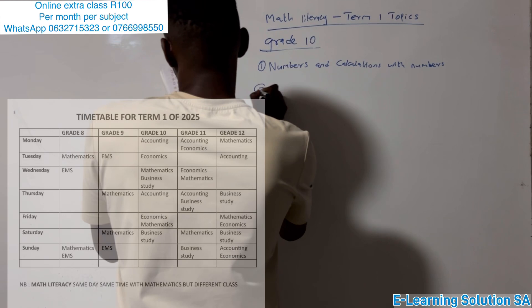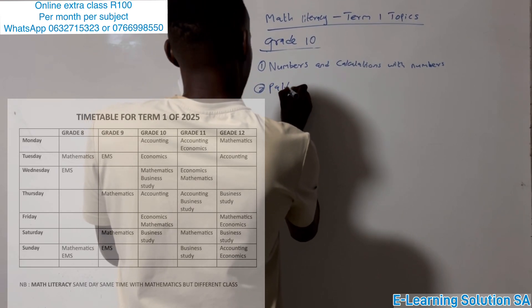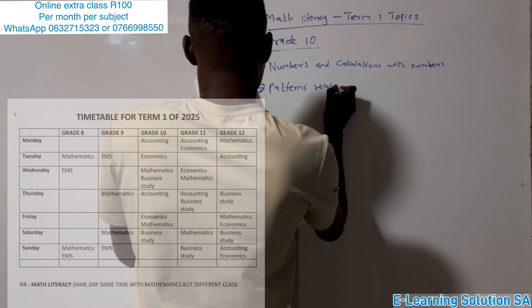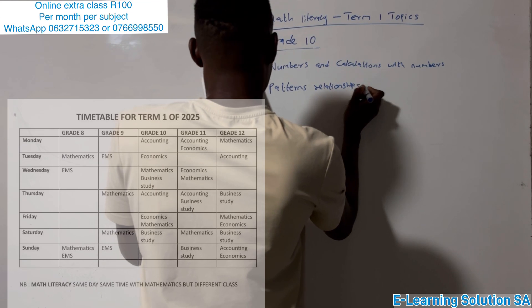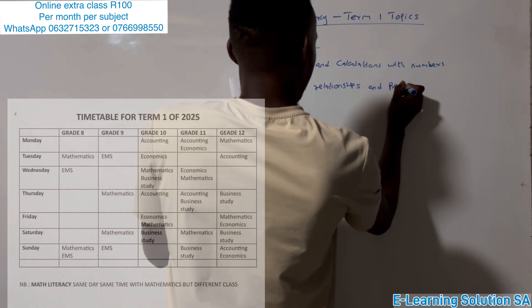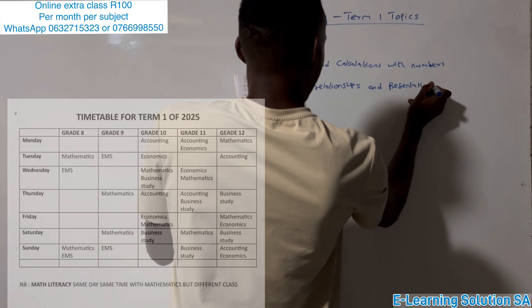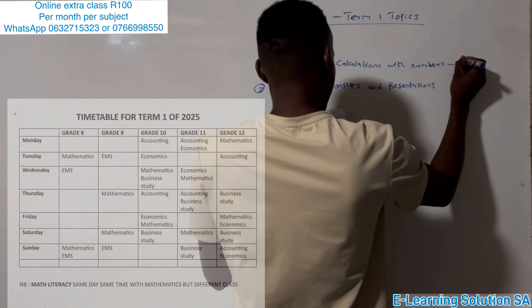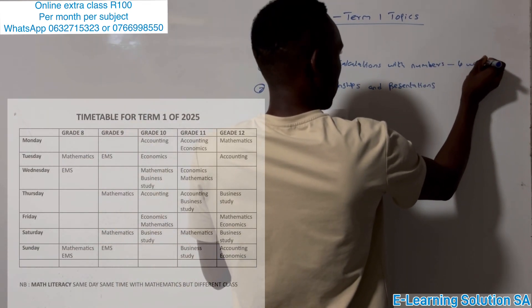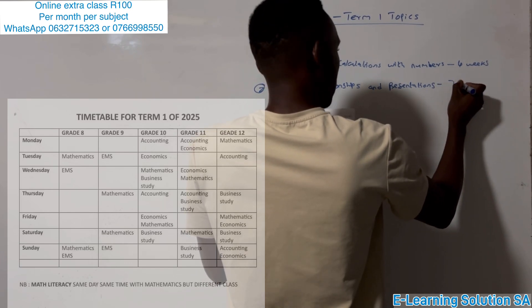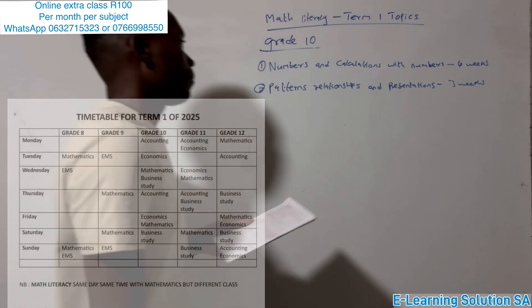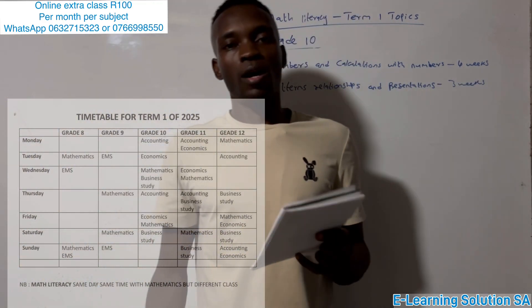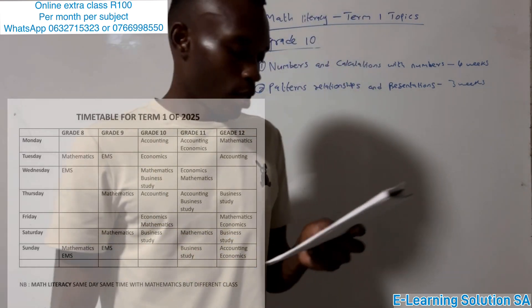Topic number two is what we call Patterns, Relationships and Representation. There are some graphs here that you are going to do under this topic.